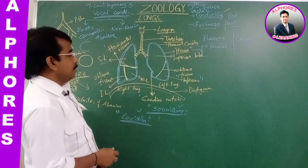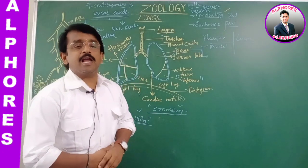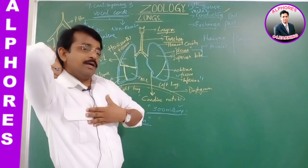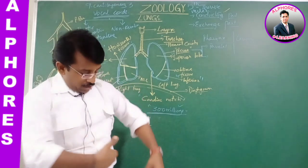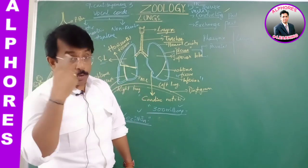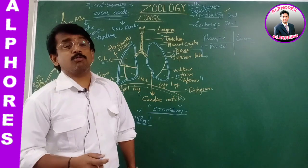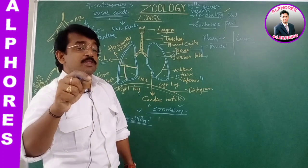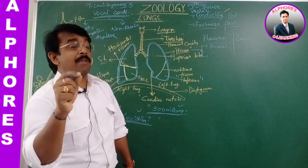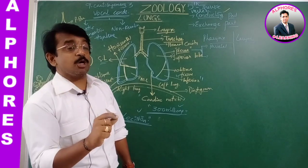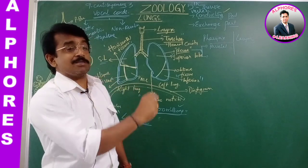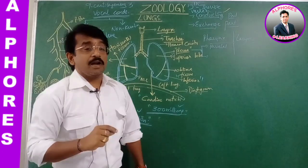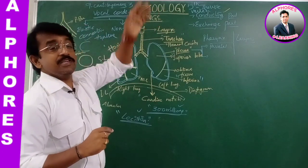The lungs are in the thoracic cavity, an airtight chamber. It is dorsally bound by the vertebral column, ventrally by the sternum, laterally by the ribs, and posteriorly by the diaphragm. The ribcage and diaphragm play a vital role in respiration. The diaphragm has radial muscles, and ribs — biologically called the costa — are associated with intercostal muscles, both external and internal.